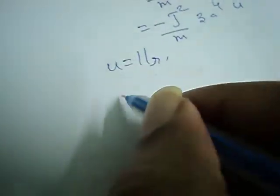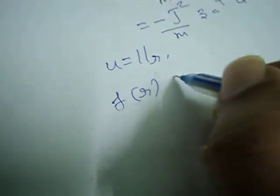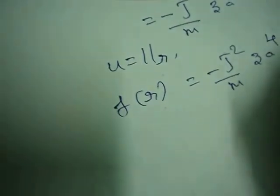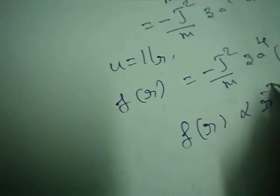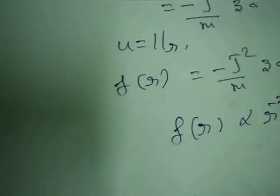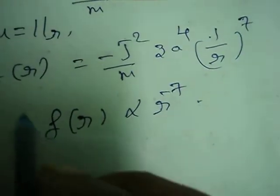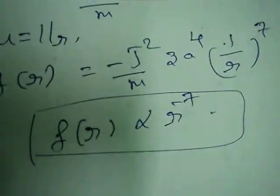Since u = 1/r, substituting gives F(r) = −J²/m · 3a⁴ · (1/r)⁷. Therefore F(r) is directly proportional to r⁻⁷. This is the force law.